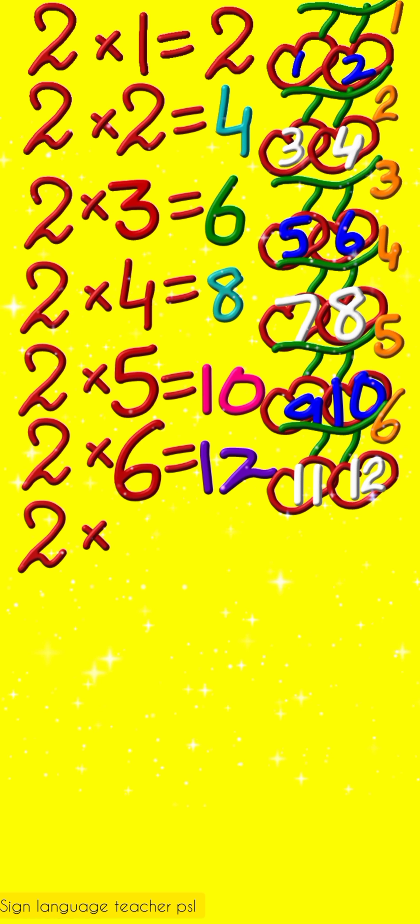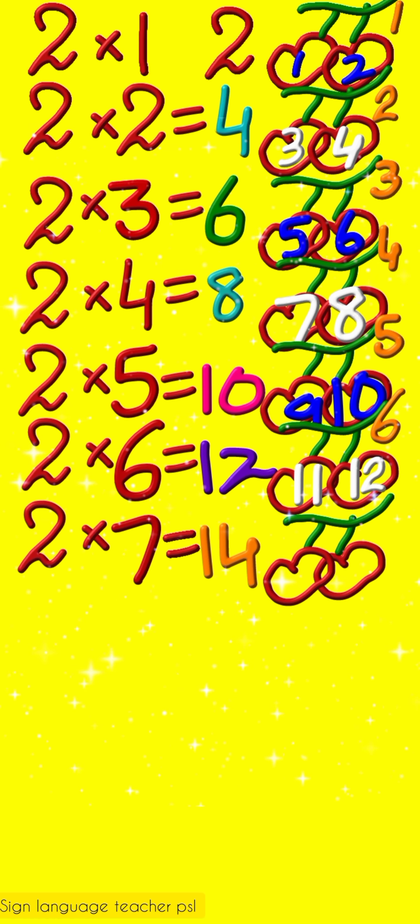Kids, this is so easy. Two sevens are fourteen. Add two more cherries to the seventh twig. Thirteen, fourteen.